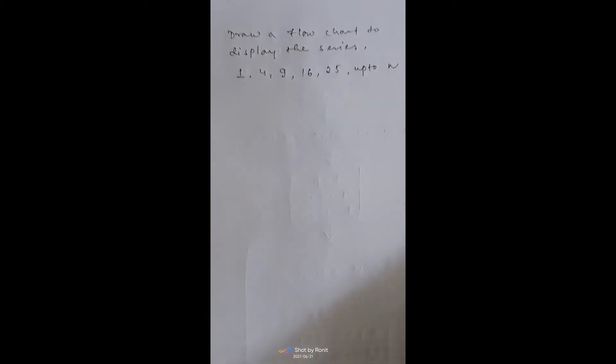We can see that every number is the square of its term. Like, first term is 1, so 1 square equals 1. Second term is 4, that means 2 square is 4. Then third term means 3 square, that is 9, then fourth term that is 16, 4 square. And so on. Let us write the flowchart.